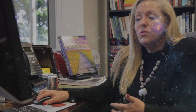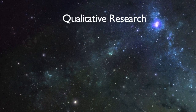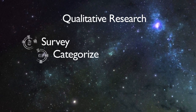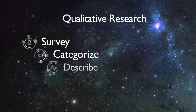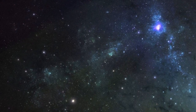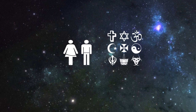You can remember qualitative data by thinking of the word quality — like what quality does this represent? There are entire courses on qualitative research that focus on surveys, categorizing, and describing the world around us. Examples of qualitative data include gender, race, and religion. We call this information nominal level data.